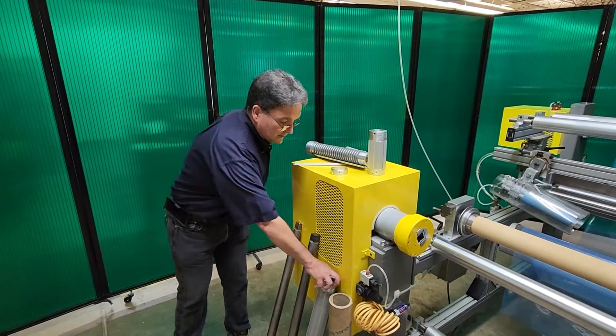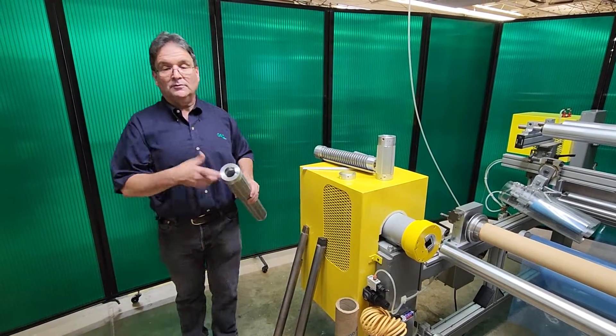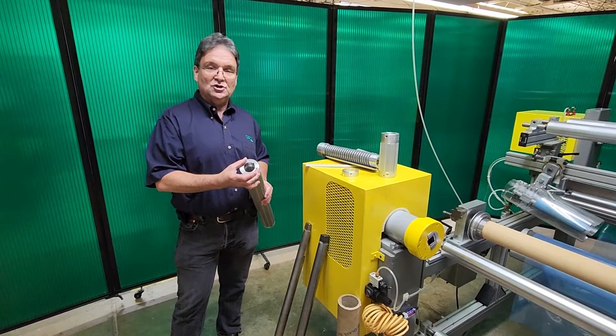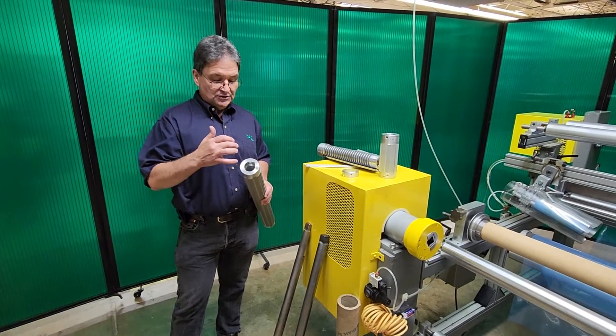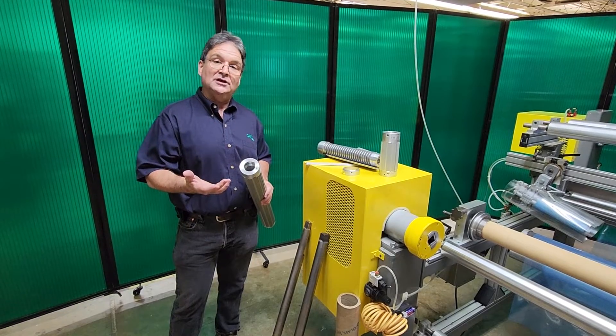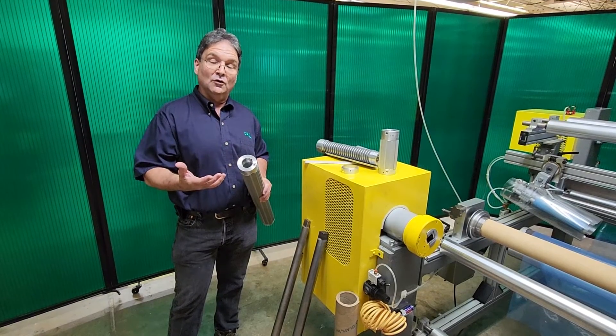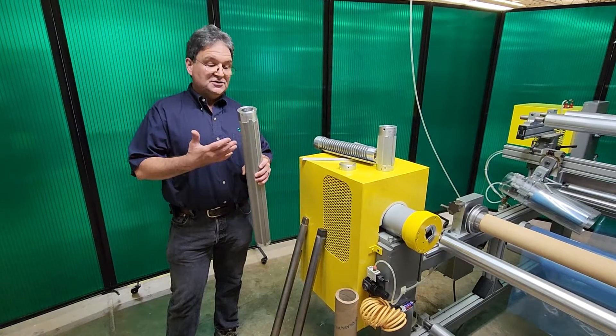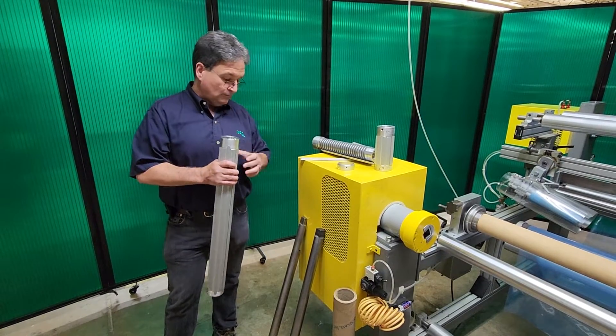CAC's standard air shaft has a throughbore but they are available with journals. We can manufacture this with built-in journal. We can manufacture this out of steel for heavy applications. If you're dealing with a very heavy roll weight the air shaft would get heavier but also it would be able to handle heavier applications.